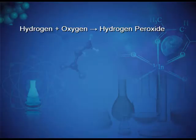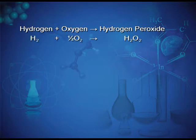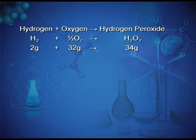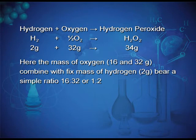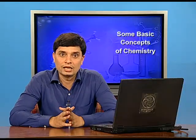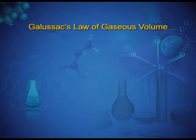The second reaction is H₂ + O₂ → H₂O₂. In this reaction, 2 grams of hydrogen and 32 grams of oxygen give 34 grams of hydrogen peroxide. The masses of oxygen — 16 grams and 32 grams — combined with a fixed mass of hydrogen (2 grams) bear a simple ratio of 16:32, or 1:2.